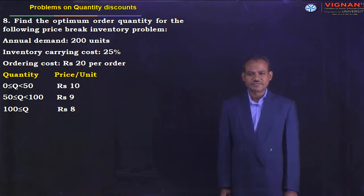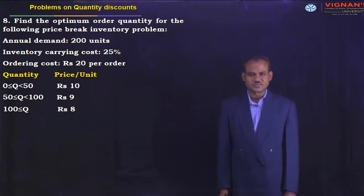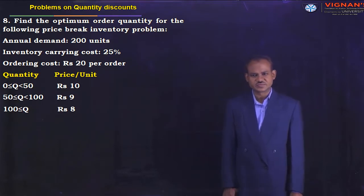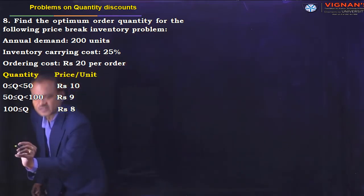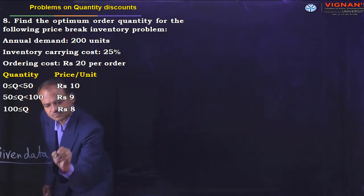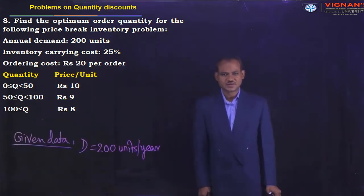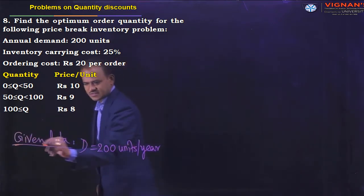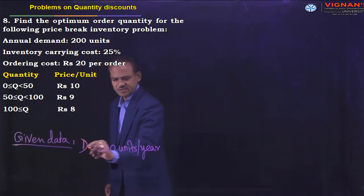First, read the given problem and try to write down the given data. Find the optimum order quantity for the following price break inventory problem. Annual demand value is equal to 200 units. Symbolically, capital D is the annual demand, equal to 200 units per year.